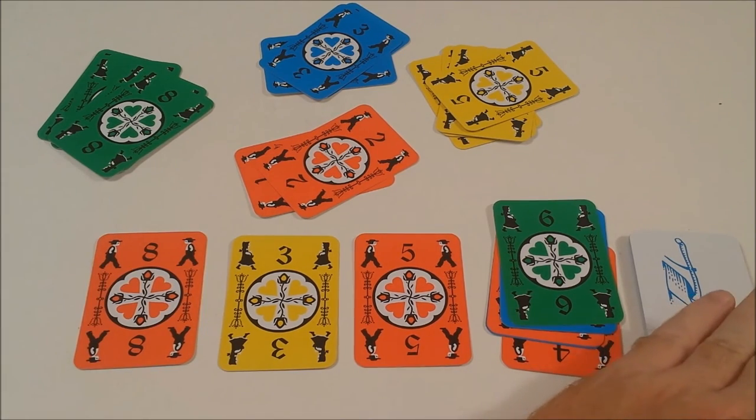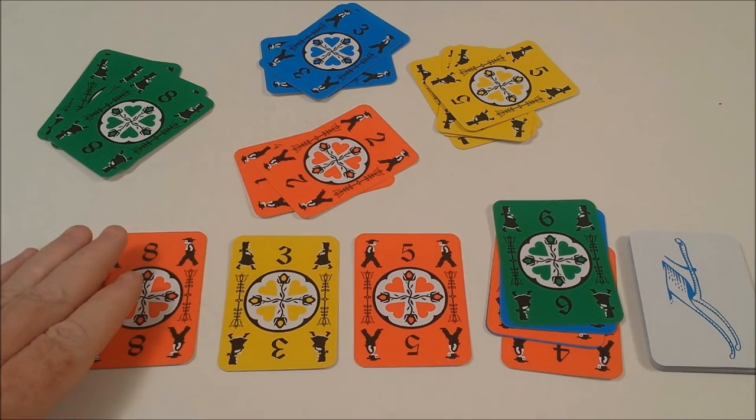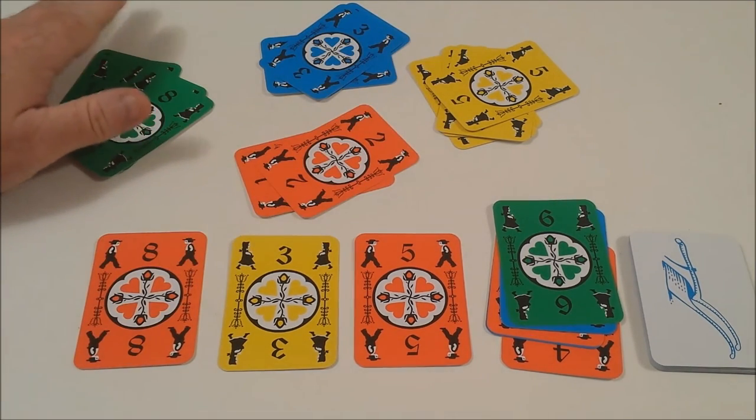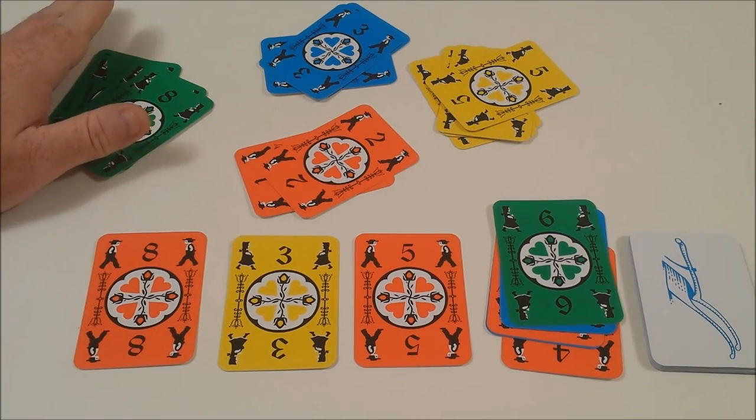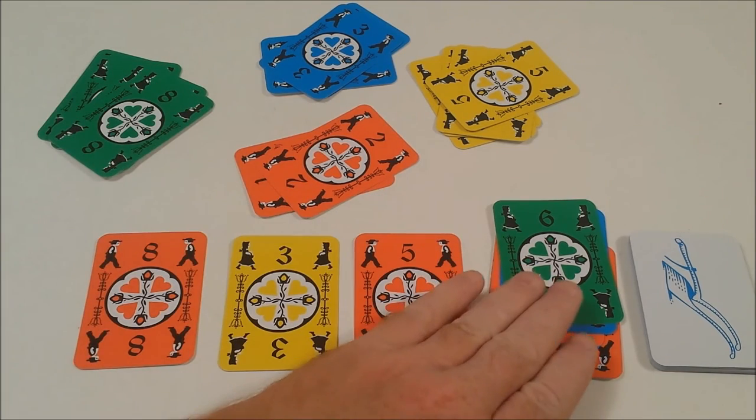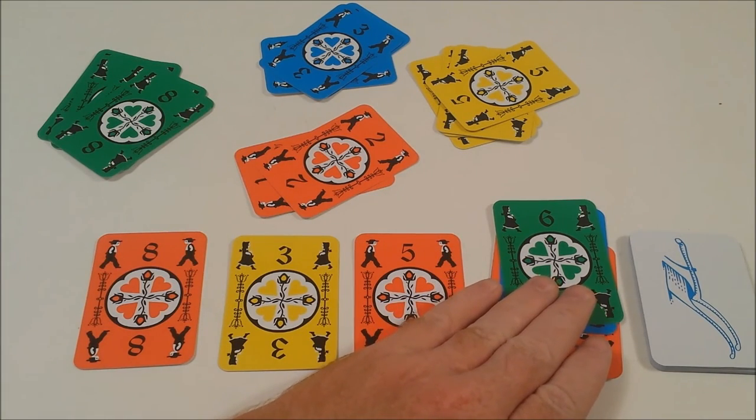Every other player gets rid of their wood pile and their post piles. They will get one point for each of their card they were able to play, minus two points for every card remaining in their Blitz pile.